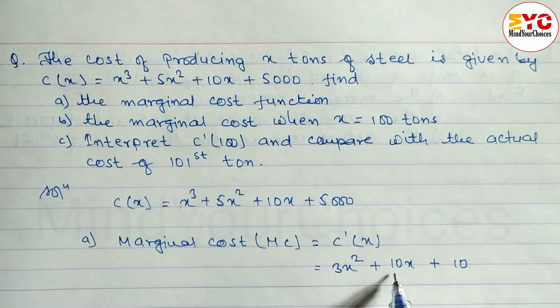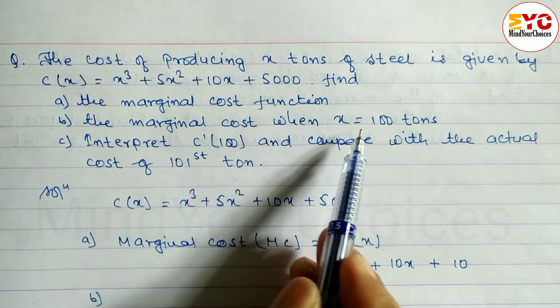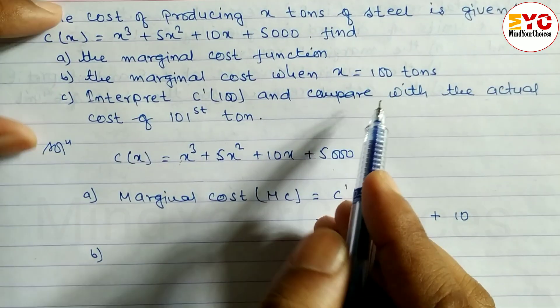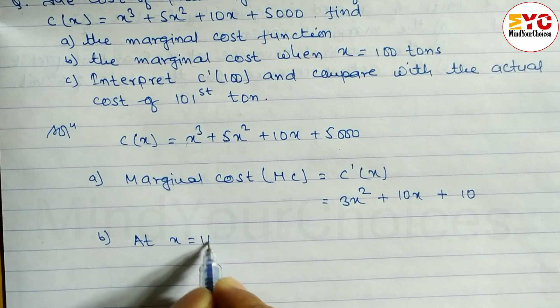So 3x² plus 10x plus 10 is the marginal cost function. For part b, the marginal cost when x is equal to 100 tons. At x is equal to 100.